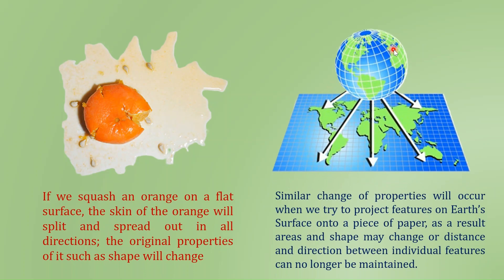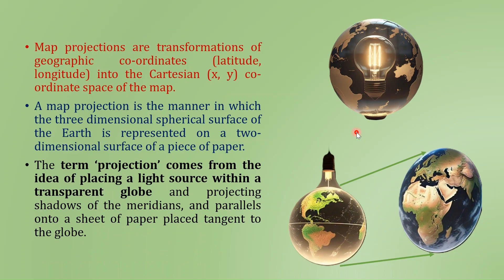Similarly, when we try to project the features on the earth's surface from the three-dimensional spheroid earth onto two-dimensional paper, there is a possibility that some change in the properties may occur. For example, the area and the shape may change, or the distance and the direction between the individual features can no longer be maintained. So in order to do so, we use map projections.